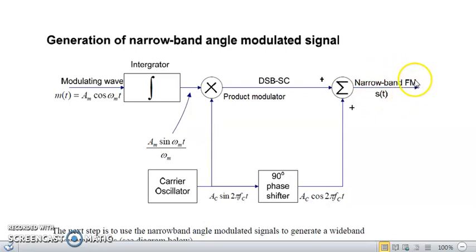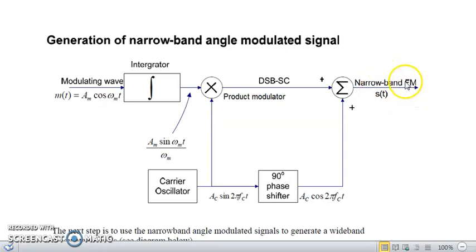To understand narrowband FM, you need to look at the spectrum of an FM signal for a modulation index less than 0.6 — for example when the modulation index equals 0.5. You will see a single upper sideband, a single lower sideband, and the carrier frequency, which is exactly what narrowband FM produces: FC + FM, FC − FM, and FC.